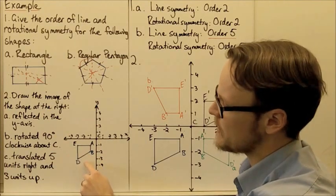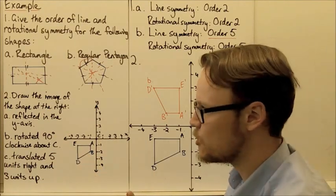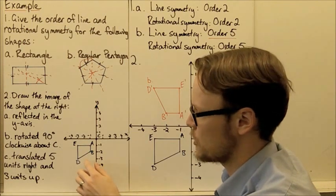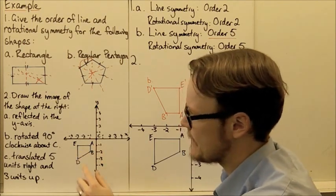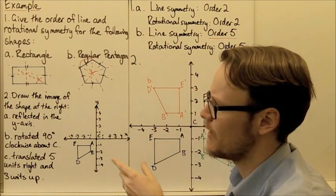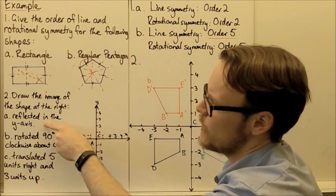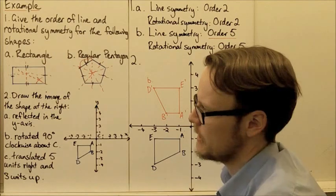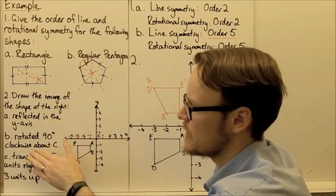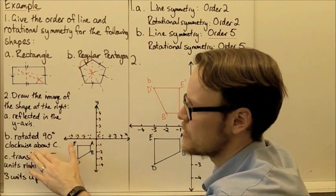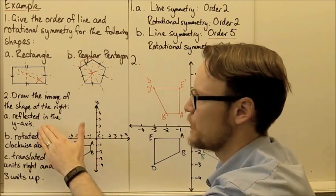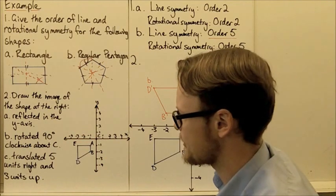Now we've been given a shape with vertices A, B, D, E, and we need to draw the image of this shape once we've done a few different transformations to it. The first is a reflection, the second is a rotation, and the third is a translation.